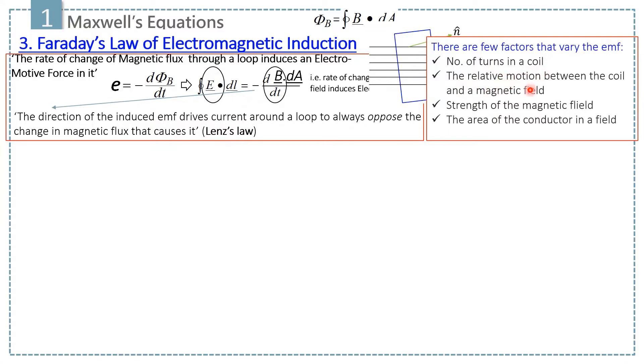And the second one is the relative motion between the coil and the magnetic field. It means if the relative motion between the coil and the magnetic field is increased, the current in the conductor increases.